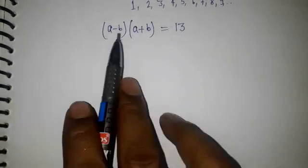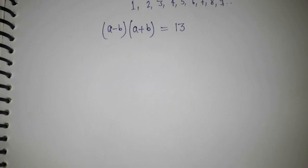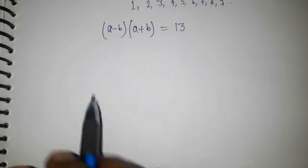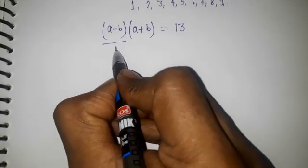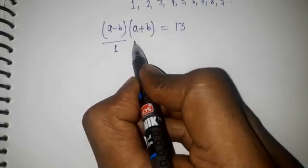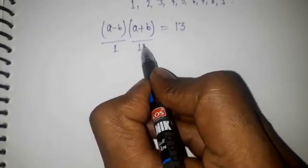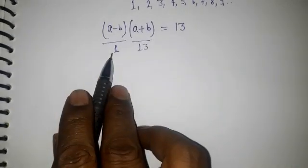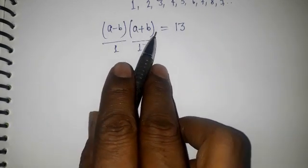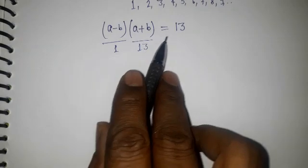...and a + b, these two numbers. If I'm considering this subtraction as 1, suppose 1, and a + b as 13, the sum of two numbers will be 13. Then the product a - b into a + b, that is 1 × 13, gives us 13.